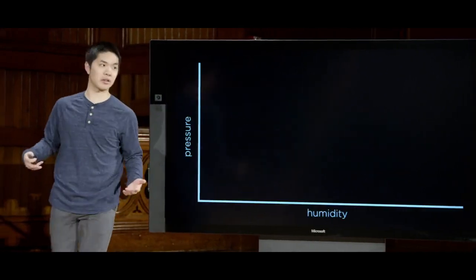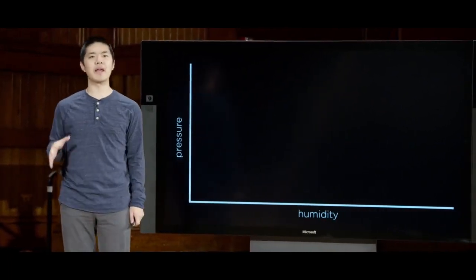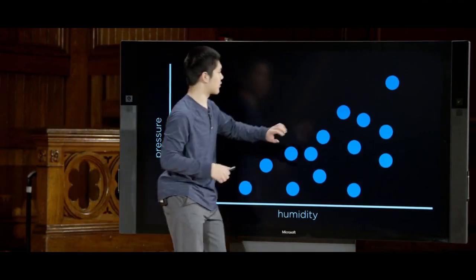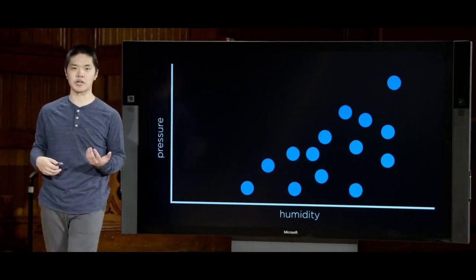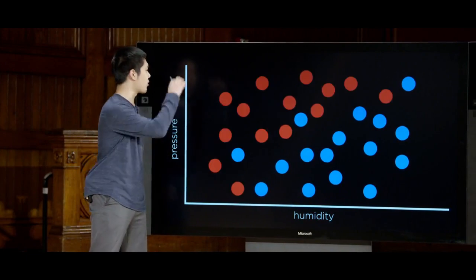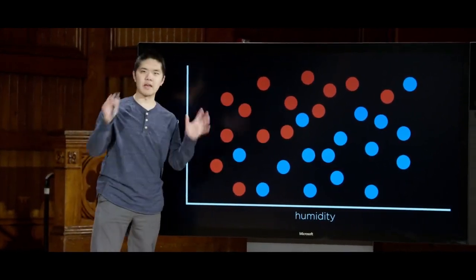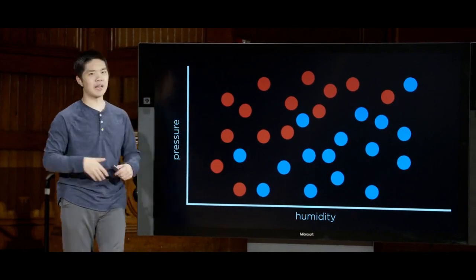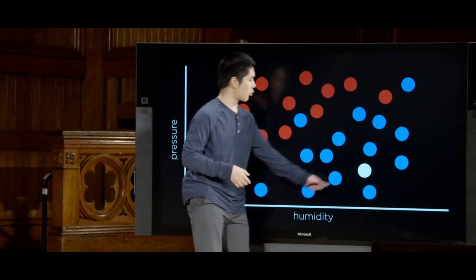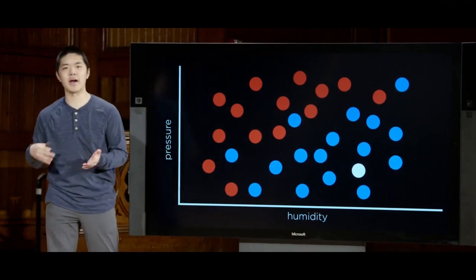What we might do is take all the days that were raining and plot them on this graph — here might be all the rainy days, where each rainy day is one of these blue dots corresponding to a particular value for humidity and pressure. Then I plot the not rainy days in red. Blue stands for a rainy day; red stands for a not rainy day. What I'd like the computer to do is train a model so that if presented with a new input without a label — like this white dot here — it can predict whether to classify it as a blue dot (a rainy day) or a red dot (a not rainy day).